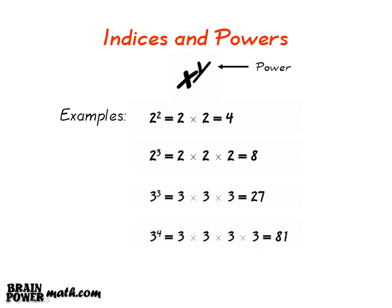3 to the power of 4 is equal to 3 multiplied by 3 multiplied by 3 multiplied by 3, which is equal to 81. 4 squared is equal to 4 multiplied by 4, which is equal to 16.